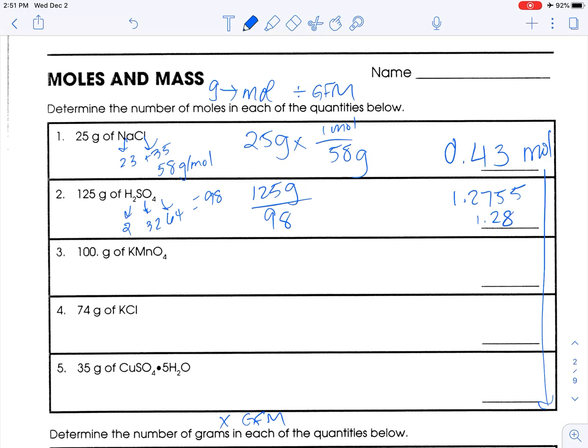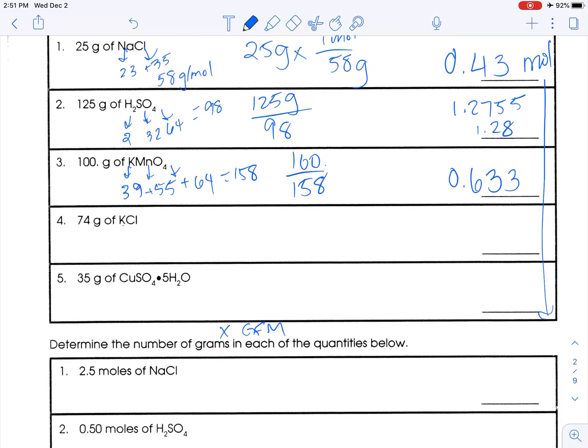Alright, GFM of potassium permanganate. Potassium is 39, manganese is 55, and 16 times four is 64 again. So 64 plus 55 plus 39 is a mass of 158 grams per mole. So 100 point, which means three sig figs, divided by 158. To keep three sig figs we're going to do 0.633 because it was 0.6329, units are moles.